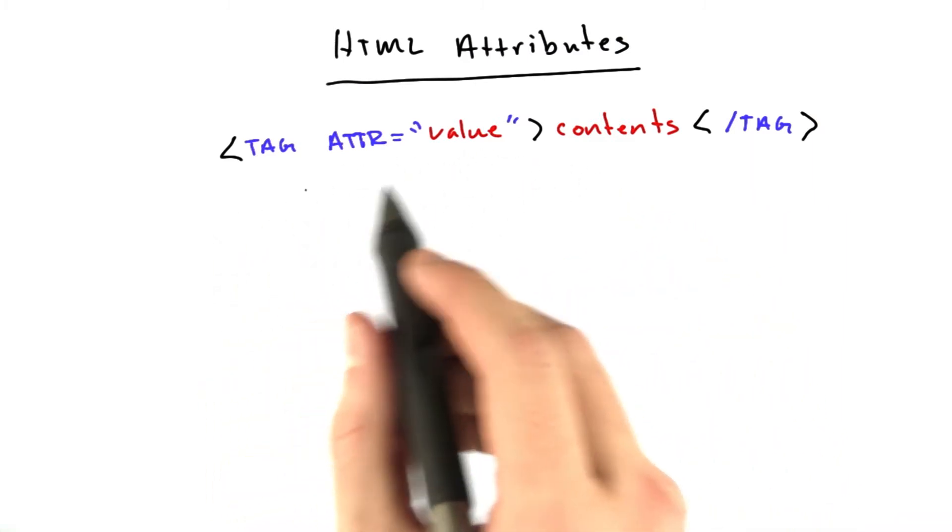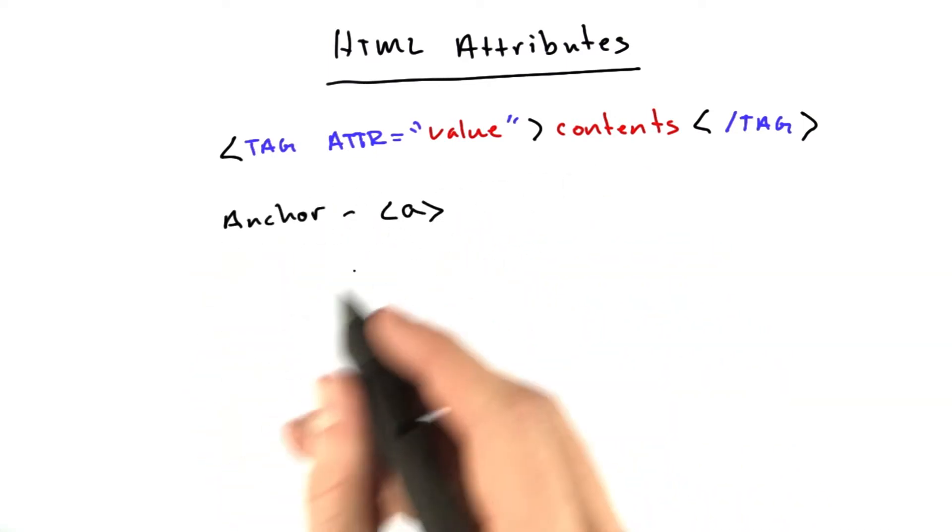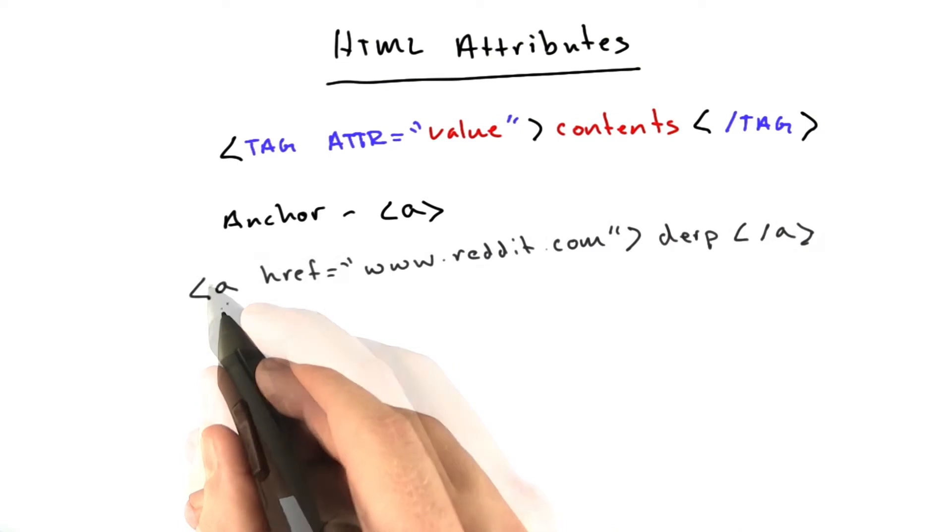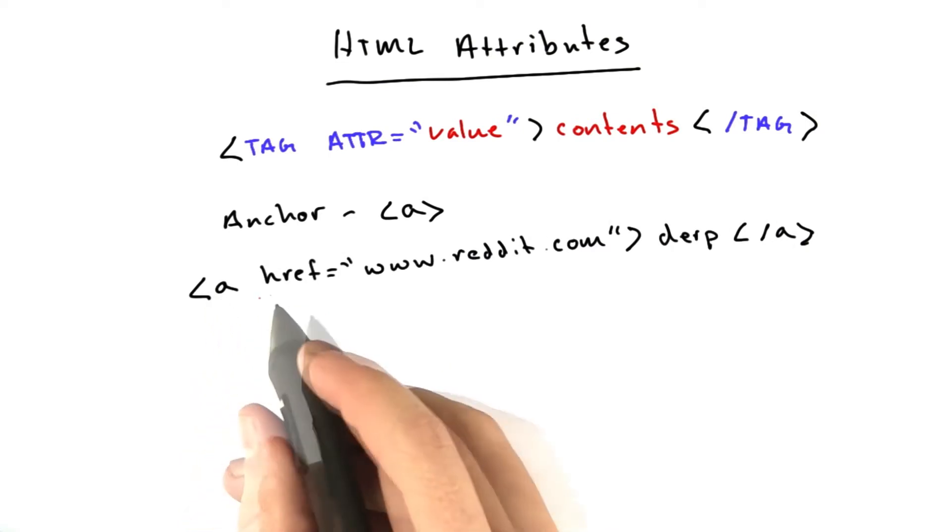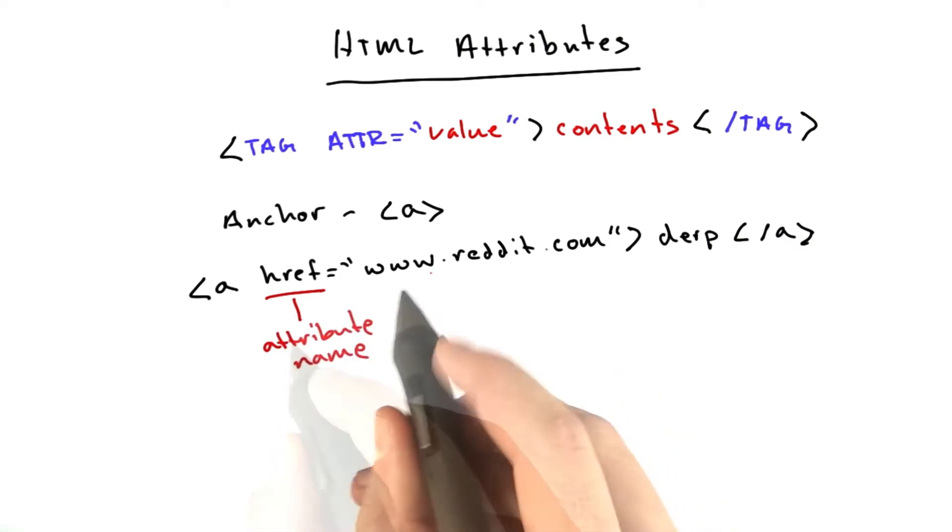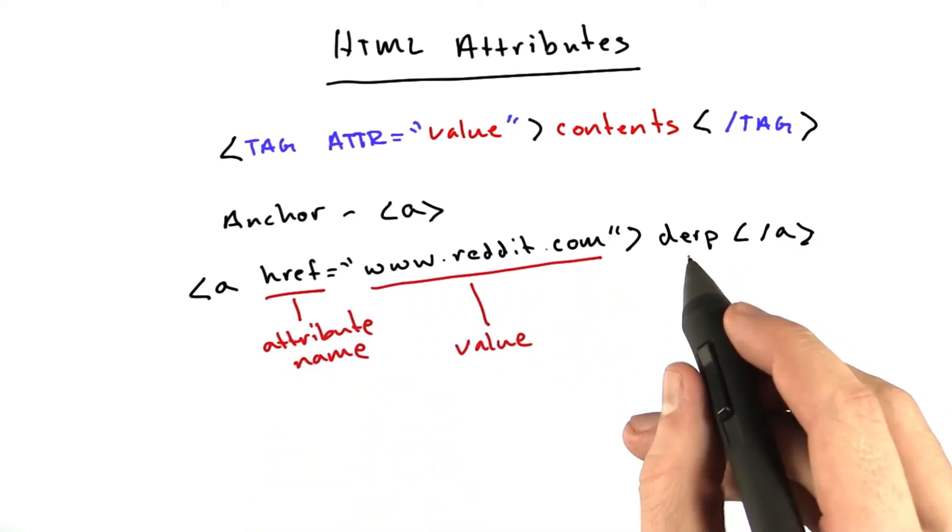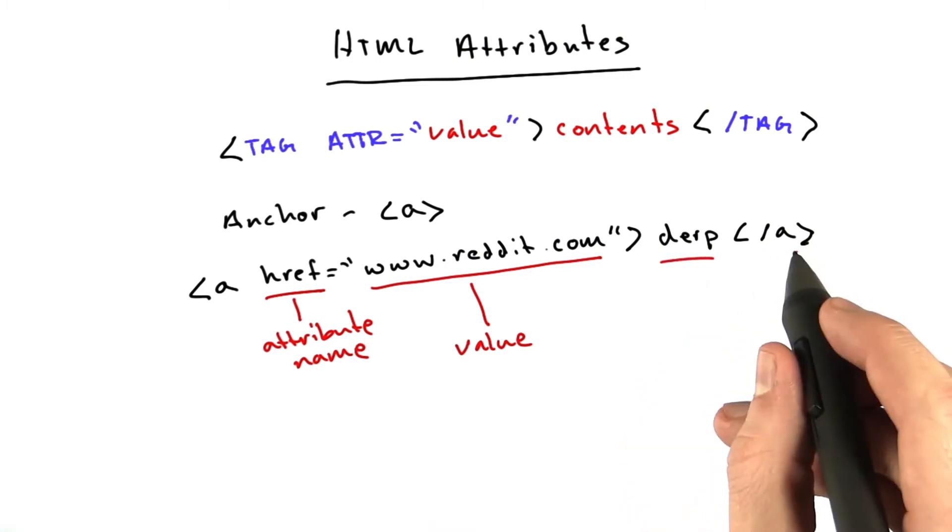An example of a tag that uses an attribute is the anchor tag, which is the A tag. And a full example looks something like this. You've got the opening A. You've got an attribute called href. You've got its value, which in this case is a URL. You've got the contents. And then you've got the closing anchor tag.